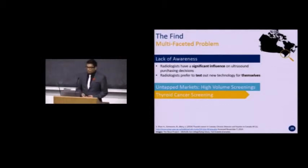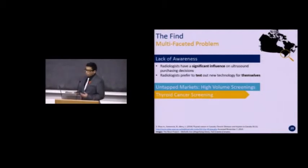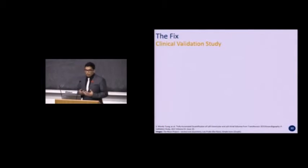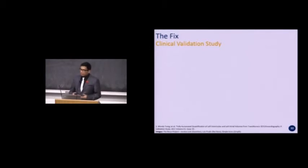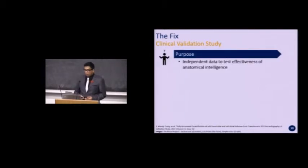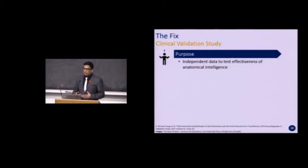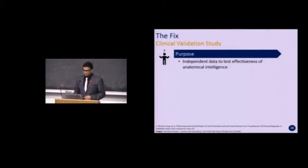The strategy our team proposes will try to address both problems simultaneously. We propose that Philips perform a clinical validation study to provide independent data testing the effectiveness of the anatomical intelligence system in the context of thyroid cancer screening. First, this would get physicians aware of the technology — Philips would provide the EPIQ 7 system to physicians to perform the study, getting physicians talking, aware of the technology, and hands-on with it. Second, generating data will allow Philips to further fine-tune the anatomical intelligence system, which relies on pattern recognition.